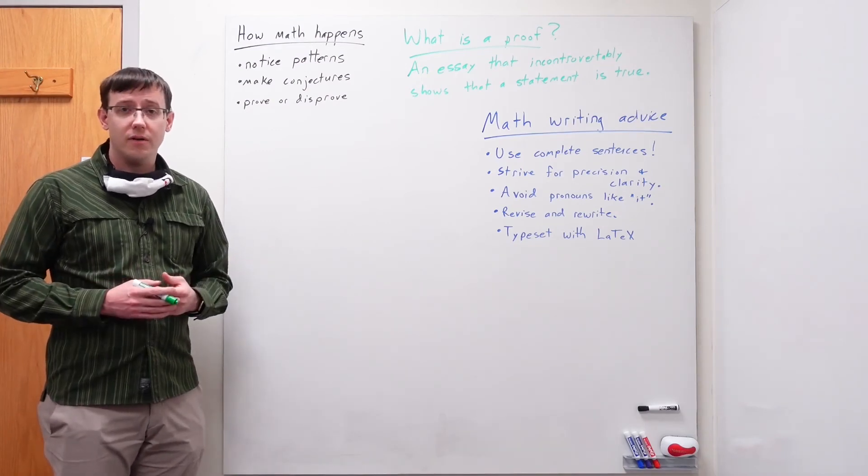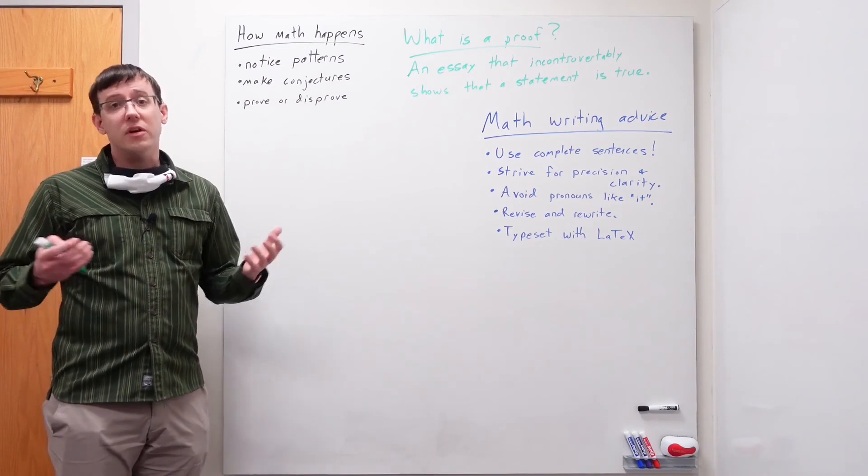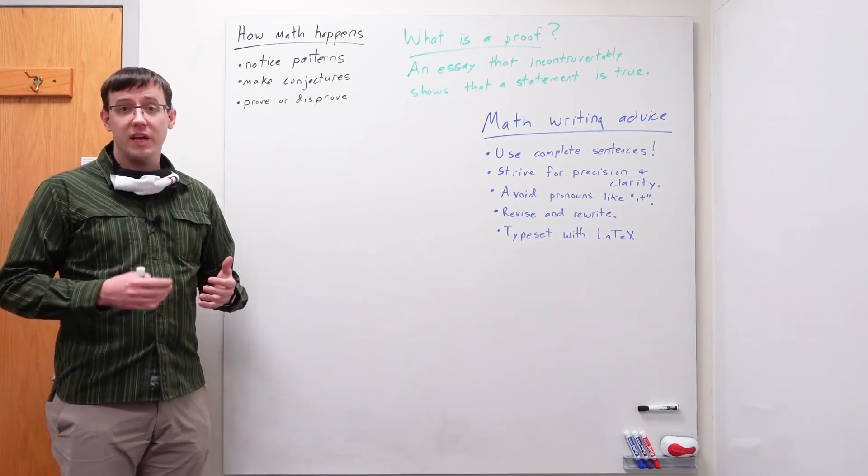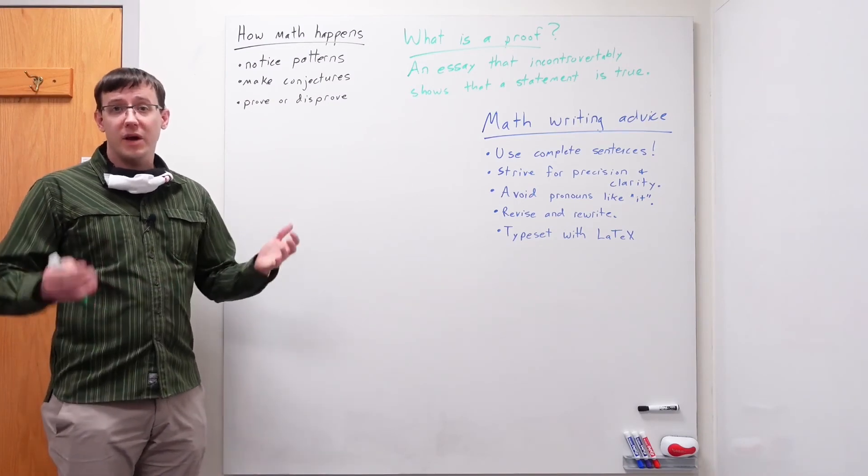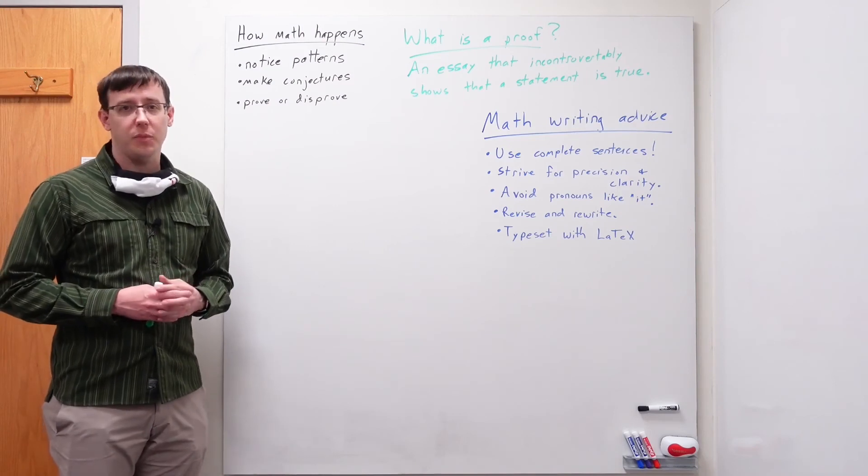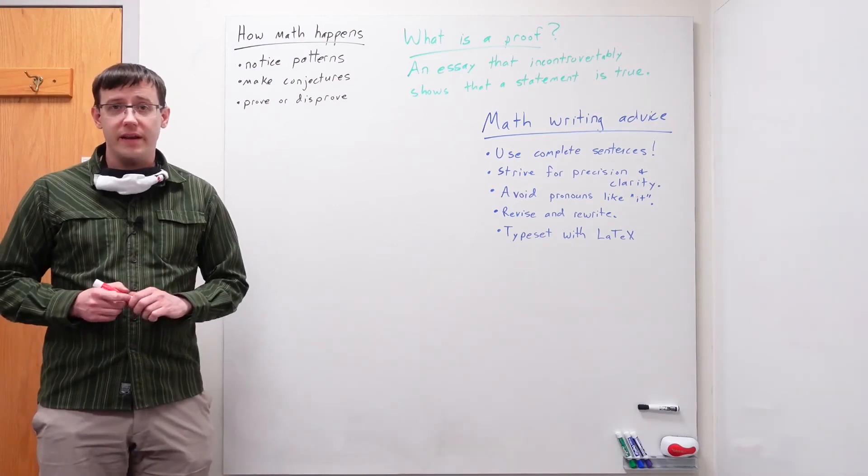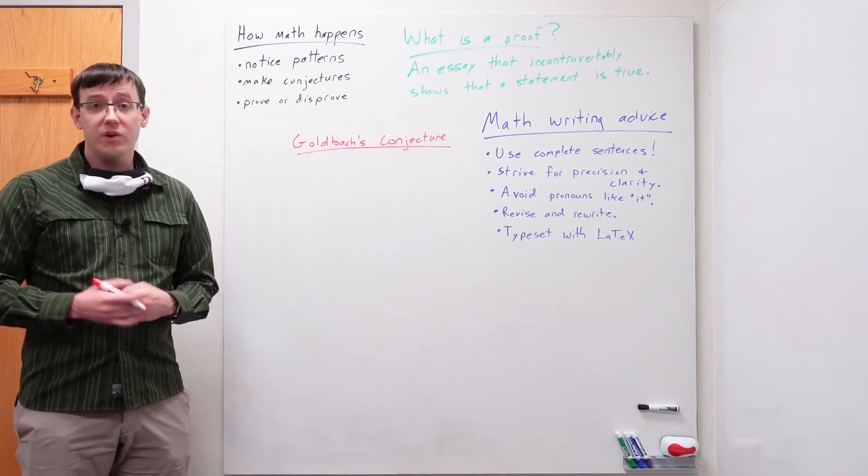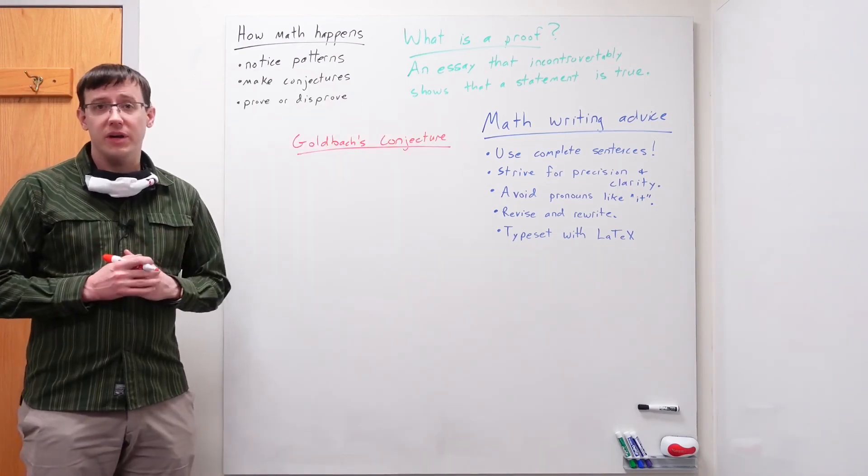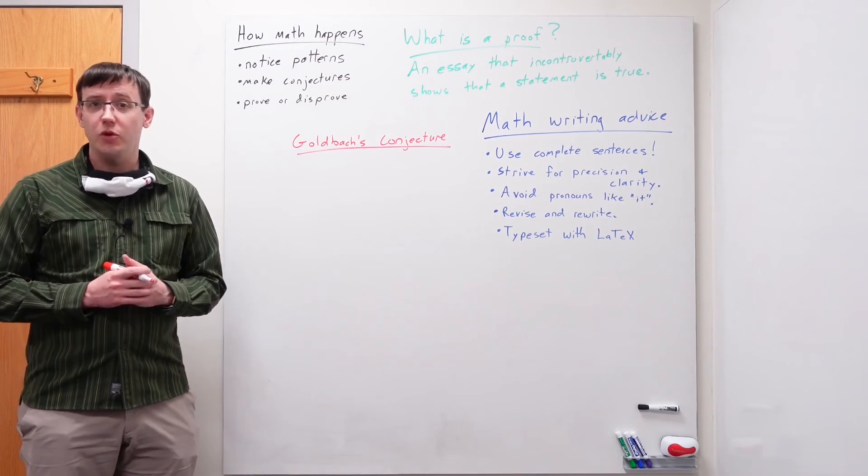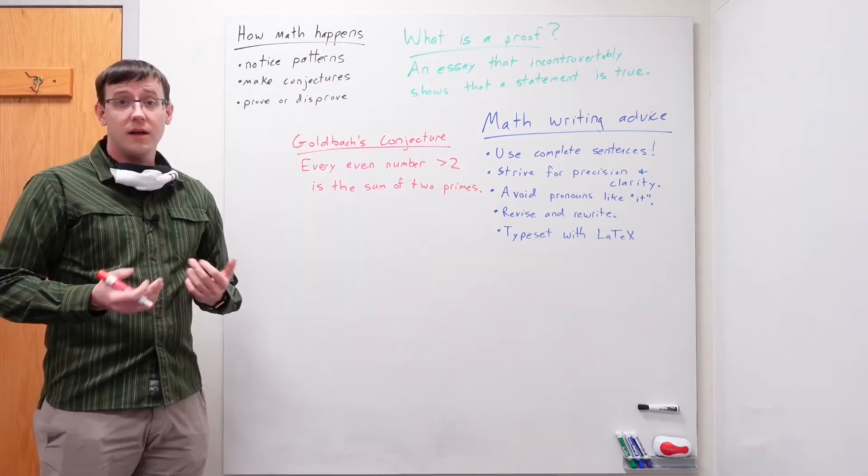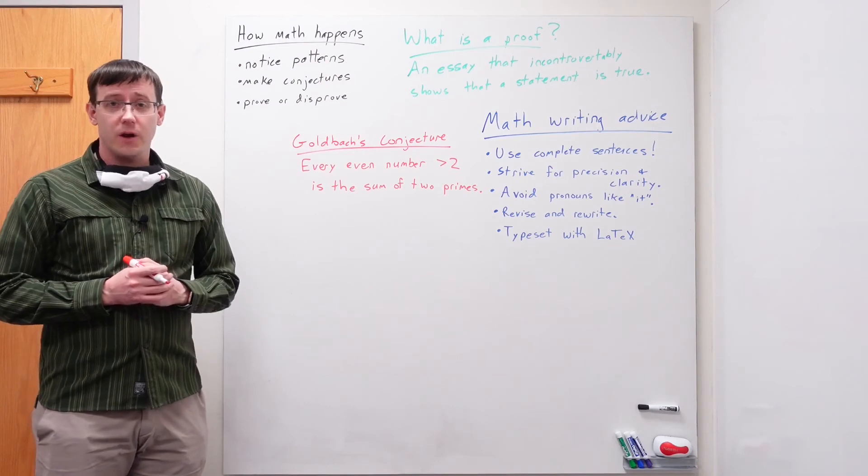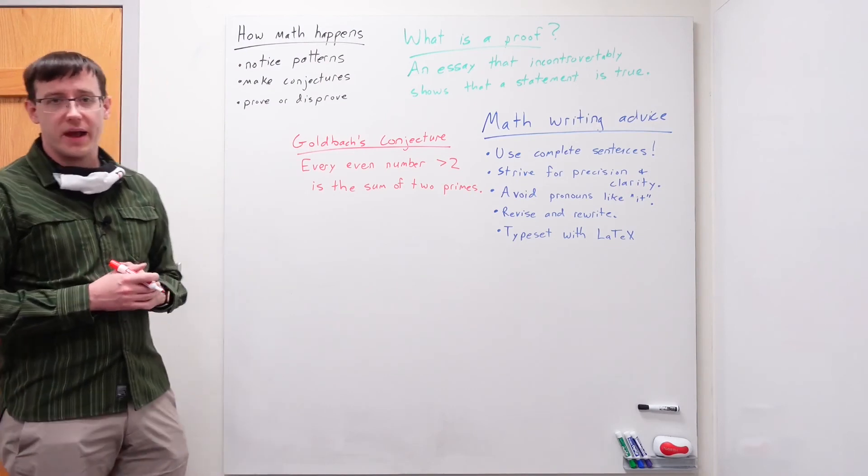As an example, there are many famous conjectures in math, statements that we think might be true but we haven't yet been able to prove. A simple one to write down is Goldbach's conjecture, which is that every even number bigger than two is the sum of two primes. Like any other, this conjecture arises out of noticing a clear pattern.